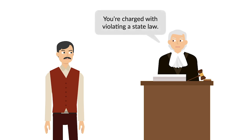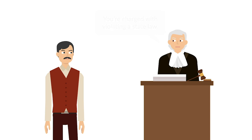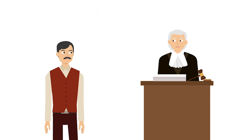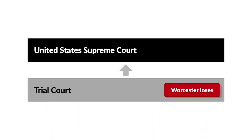Later that year, the state of Georgia charged Samuel Worcester, a Christian missionary, with violating a state law that forbade whites from residing in Cherokee territory without permission from the state. Worcester was convicted at trial and sentenced to four years of hard labor. He was offered a pardon if he would promise to not return to Cherokee land, but he refused. Instead, he appealed his conviction to the Supreme Court.